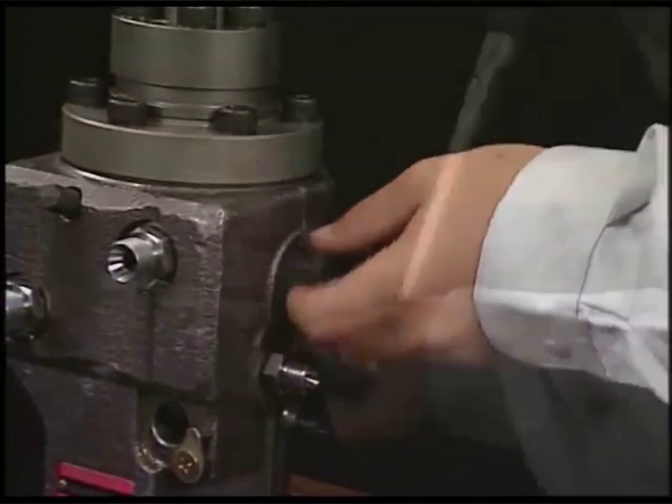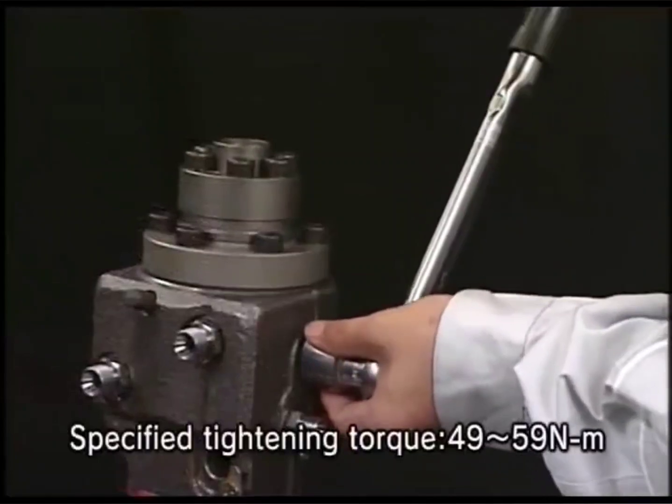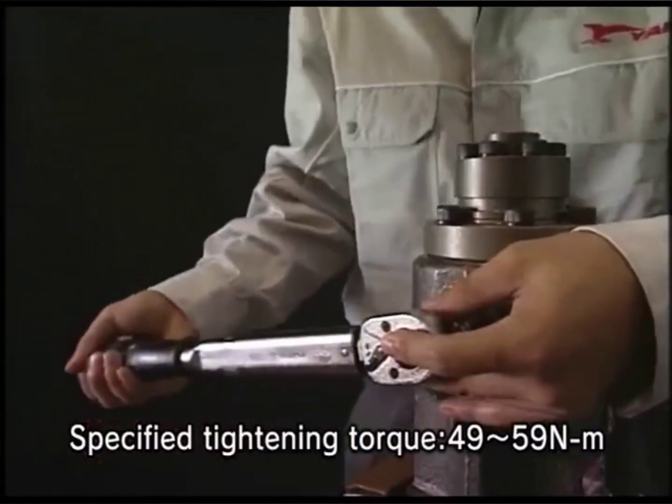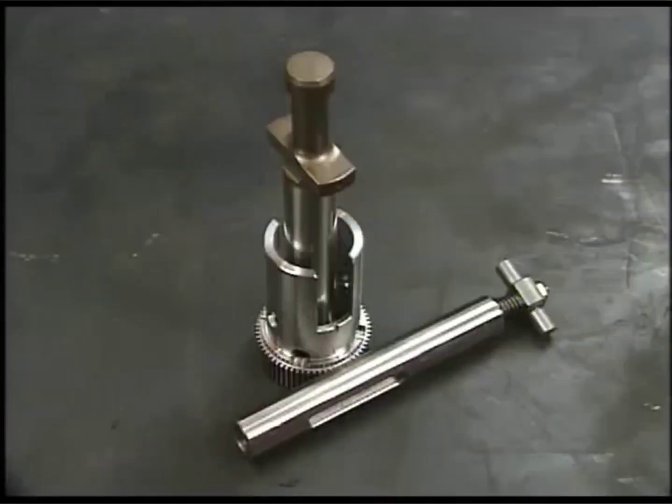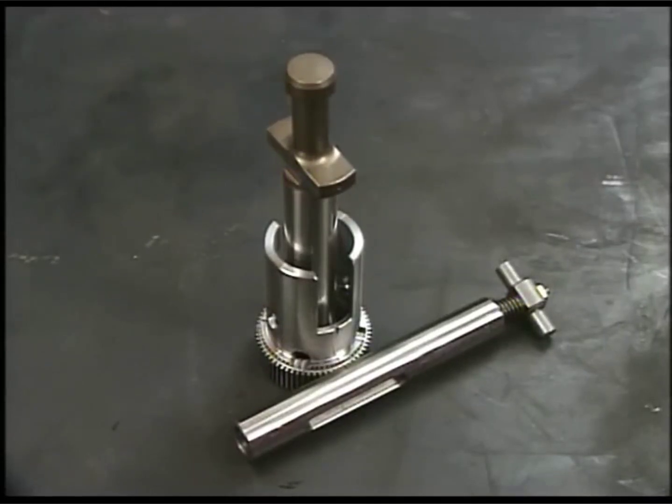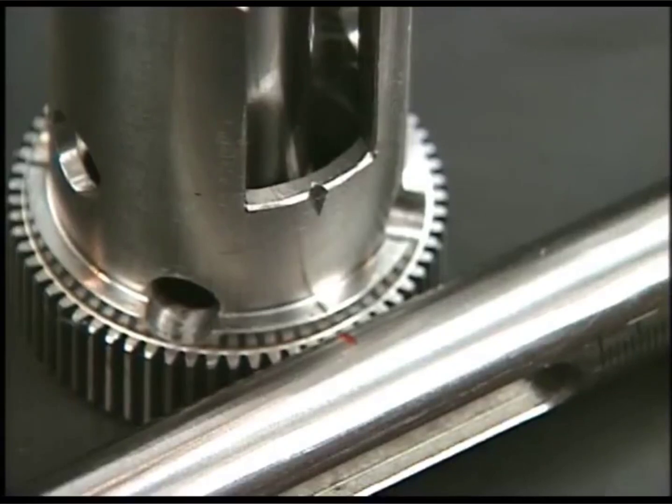Install the deflector on both sides. Align the set marks of rack, pinion and plunger. Pay attention for the set marks and then assemble them.